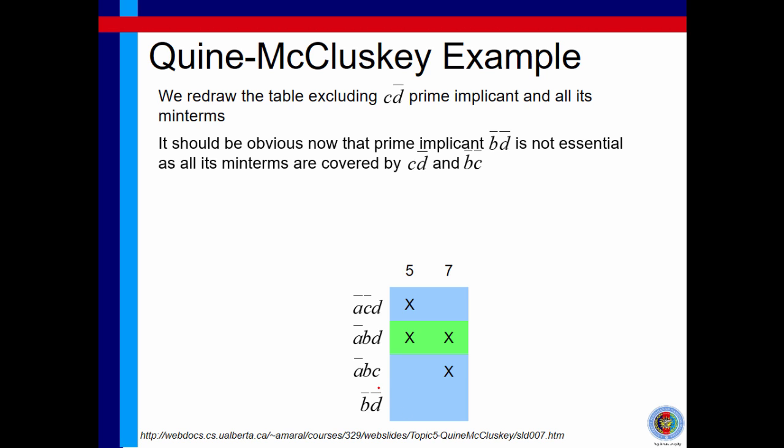At this stage, we have a prime implicant that has no minterm that it is covered. This one is not essential because what this prime implicant covered already covered by the two essential prime implicants that we took so far. This one should not be included in our final solution. We are left with this three variable prime implicant.